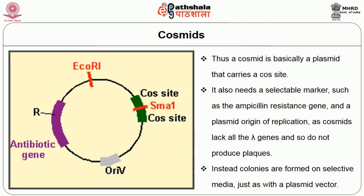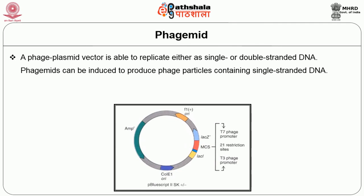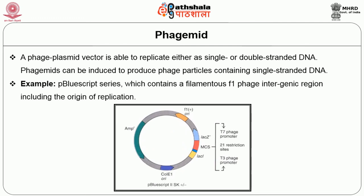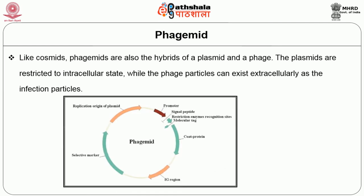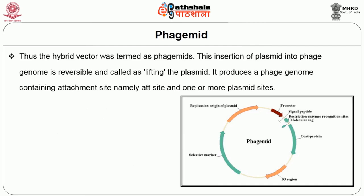Coming to the vector known as phagemid: a phagemid vector is able to replicate either single or double-stranded DNA. Phagemids can be induced to produce phage particles containing single-stranded DNA — for example, the P-bluescript series, which contains a filamentous F1 phage intergenic region including the origin of replication. Like cosmids, phagemids are hybrids of a plasmid and a phage. The plasmids are restricted to an intracellular state, while the phage particles can exist extracellularly as infectious particles. Korn and Helsinki reconstructed the plasmid of col E1 artificially and allowed it to be packaged in vitro into bacteriophage particles, then allowed the phage particles containing plasmid DNA to infect the bacterium — thus, the hybrid vector was termed a phagemid.